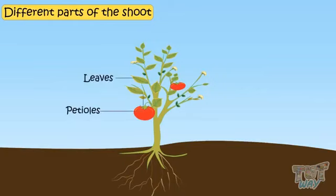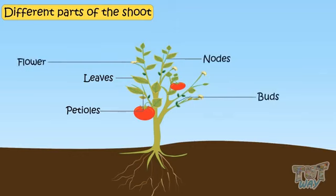Leaves, petioles, nodes, buds, flowers, fruits and branches are all different parts of shoot and each part plays a different role.